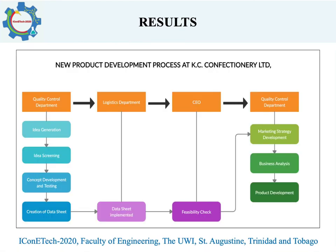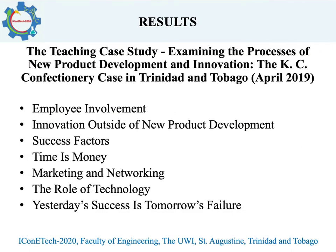If you look at the image, quality control leads the process. Post idea generation, the concept is developed within the quality control department and a data sheet is created enlisting the product name and what it constitutes. Logistics implements this form and passes it to the CEO who deems the product suitable for the market. At this point, plans are made to fund, produce, and distribute the product. Board director Ashmer Mohamed says that employees at every level are empowered to make their own decisions so they feel like they have a stake in the company, and it helps the company identify potential managers within its own workforce as well.